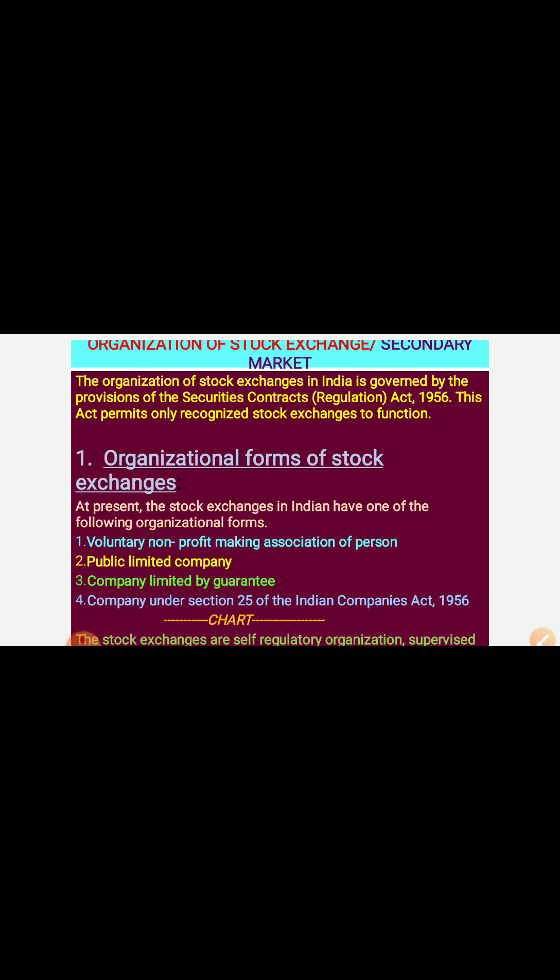The organizational forms are: first, voluntary non-profit making association of persons; second, public limited company; third, company limited by guarantee; and fourth, company under Section 25 of the Indian Companies Act 1956. For example, OTCEI.